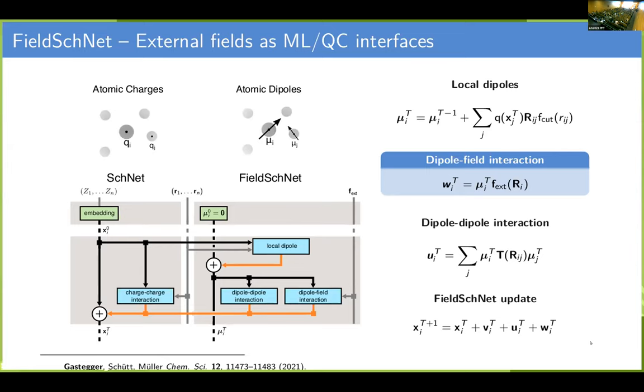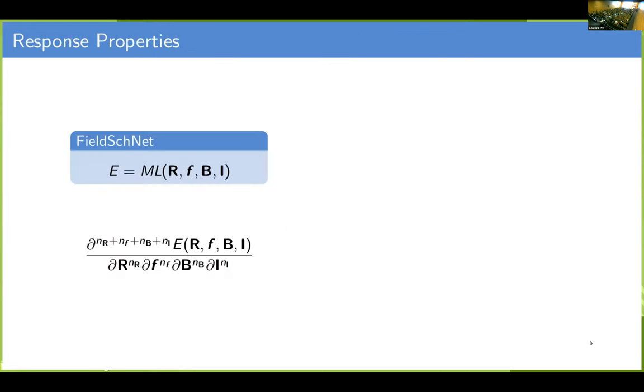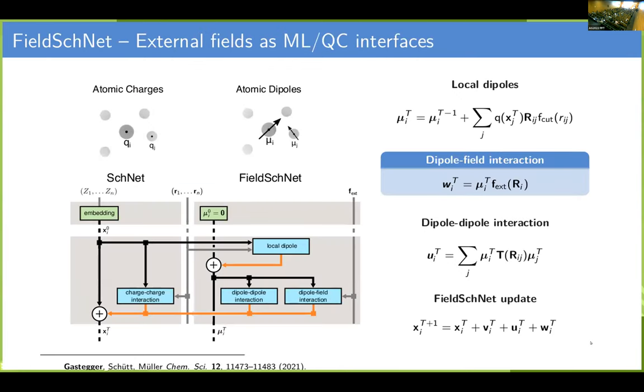And basically what you end up with is a feature representation, which includes this effect. But most importantly, you have a nice physical analog on how to couple to external fields because classically, but also in quantum mechanics, you describe the coupling with a vector field basically by taking the dot product between the dipole moment and the vector field. So first order. And we found that really using a similar expression and adding it to the message passing update makes it possible to really couple to arbitrary external fields. So what we end up with is then a function of everything. So basically of your atomic charges of your positions, but also of your external fields. And with a little bit of tricking, you can even make it a function of these initial dipole moments.